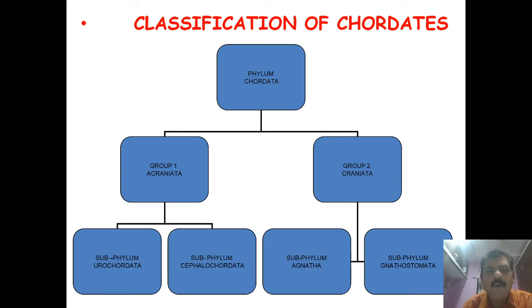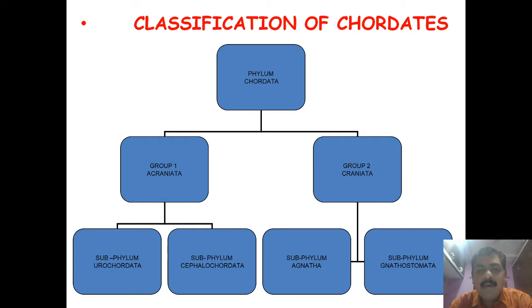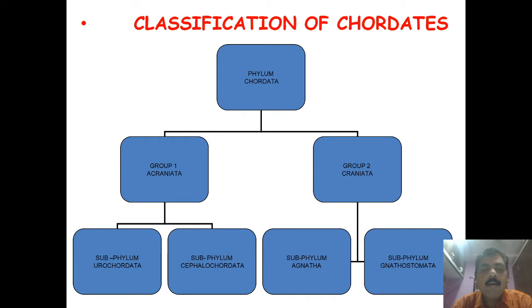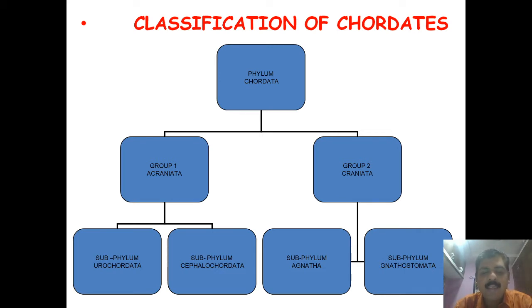We will discuss the classification of chordates. In last class we discussed that phylum Chordata is divided into two groups: one is called Acraniata and another group is called Craniata. In Acraniata, the brain box is absent, whereas in Craniata the cranium or brain box is present. The Acraniata are the protochordates, divided into two subphyla: Urochordata and Cephalochordata.